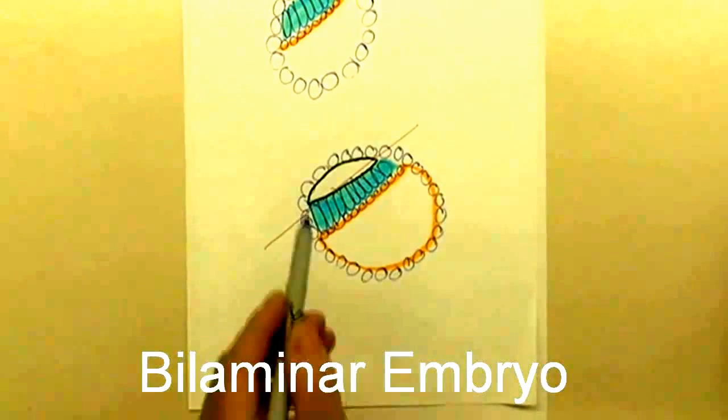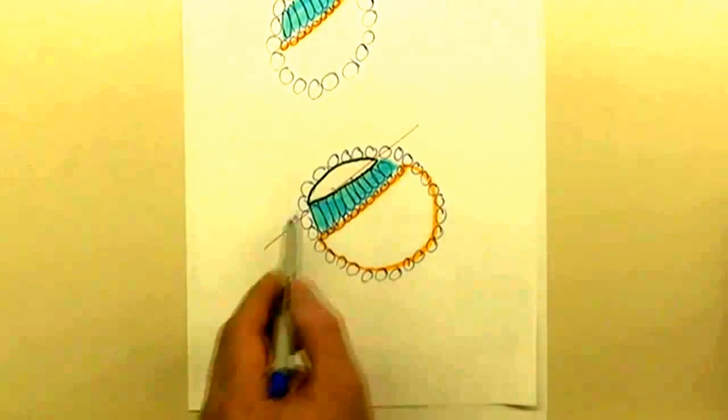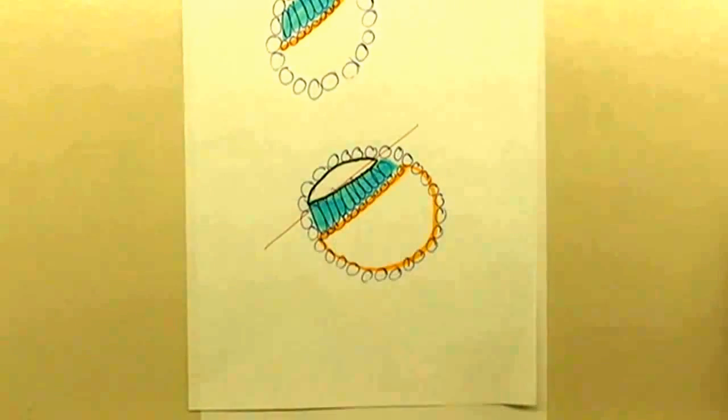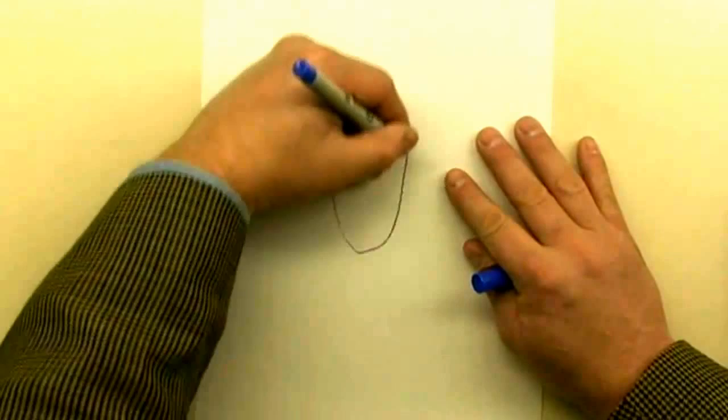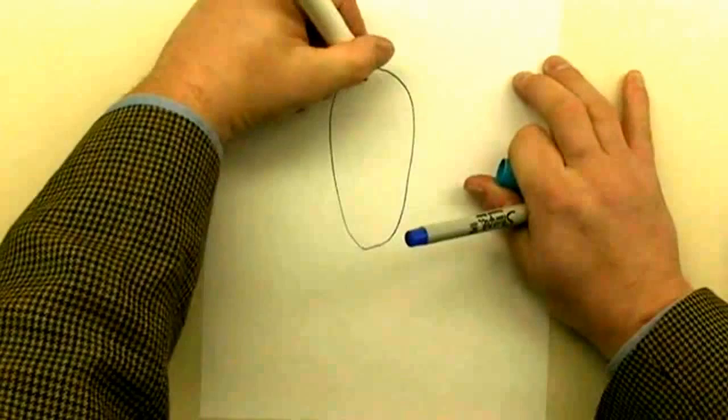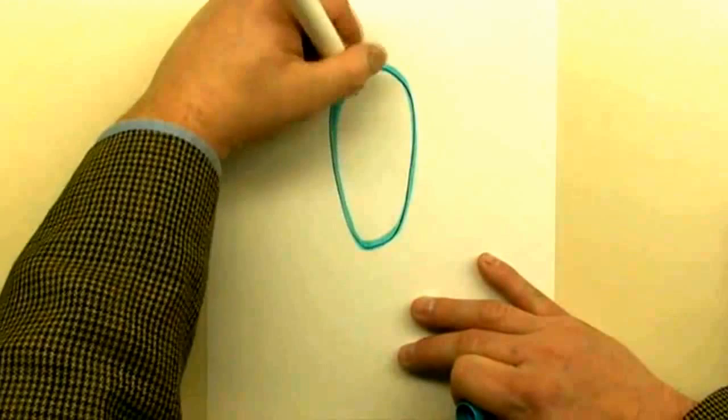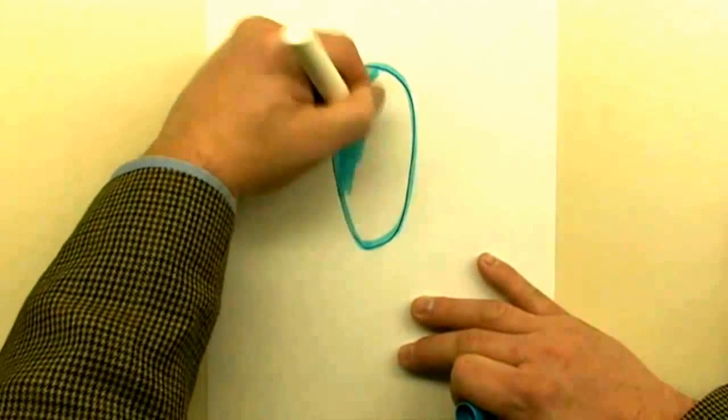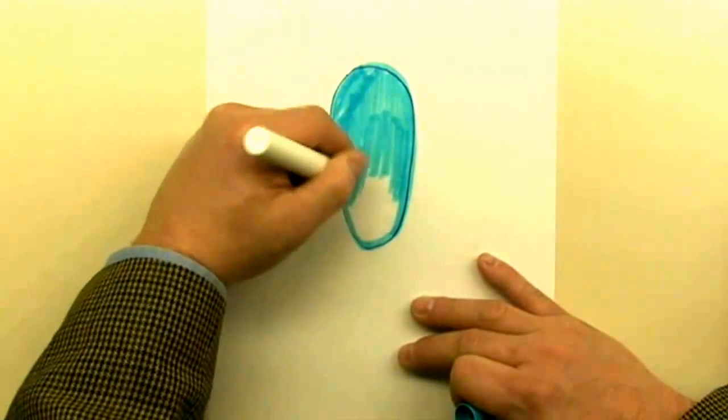We've formed the bilaminar embryo, which is the group name for these epiblast cells in blue and hypoblast cells in orange. Just above them is the amniotic cavity that we sliced open. Looking down with the lid off, we see an elongated disc of epiblast cells. These cells will actually form all the structures of the developing human. We colored it blue as the color scheme for the next steps.